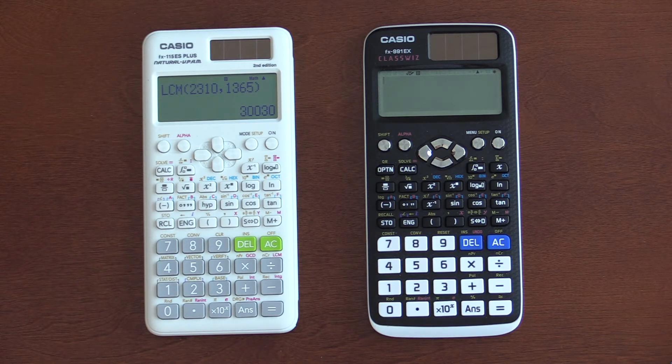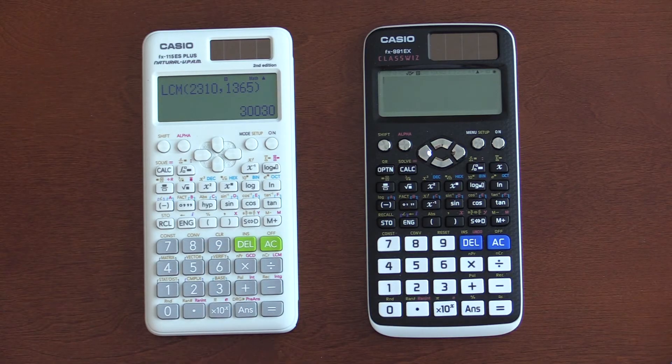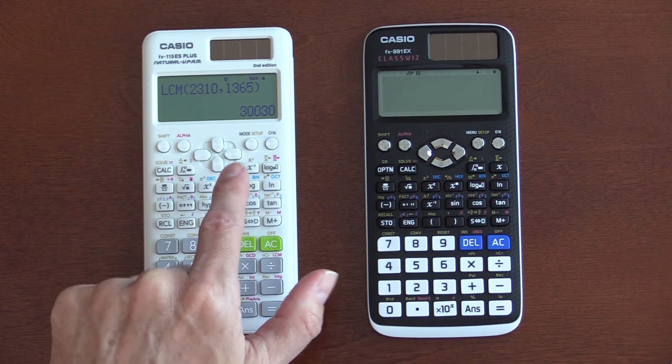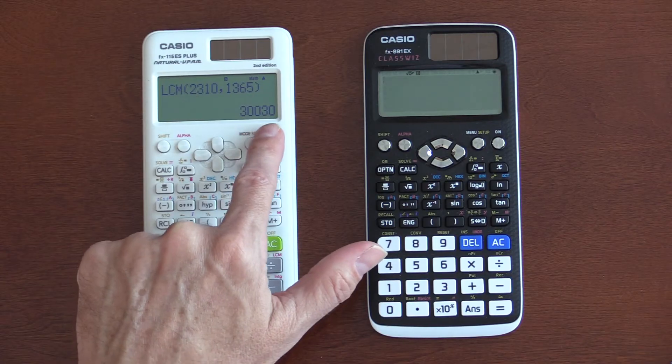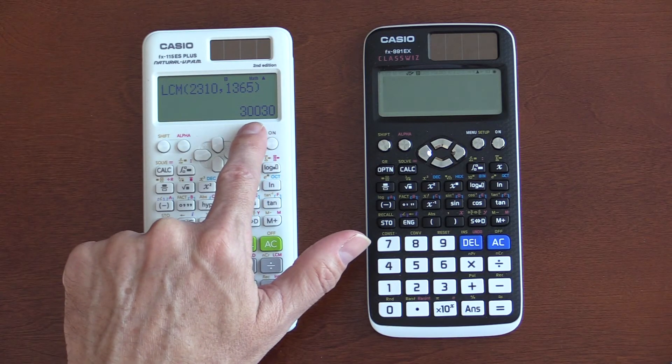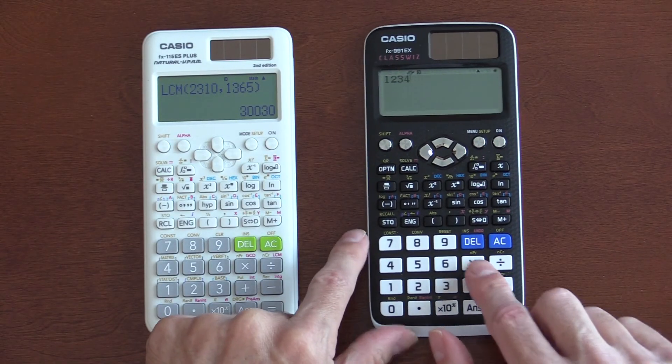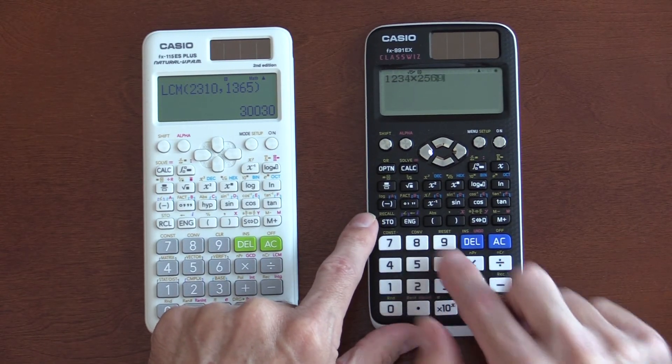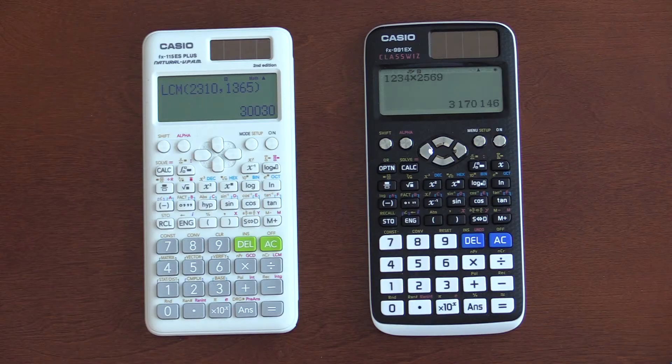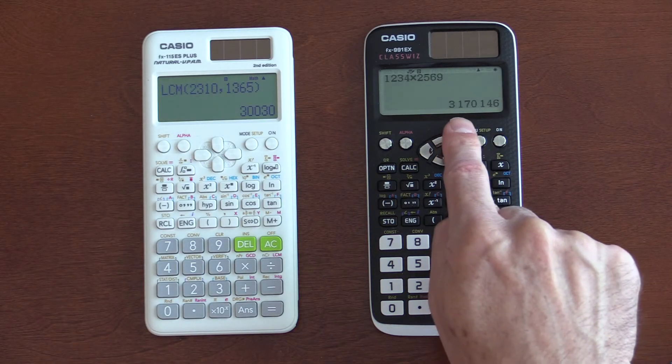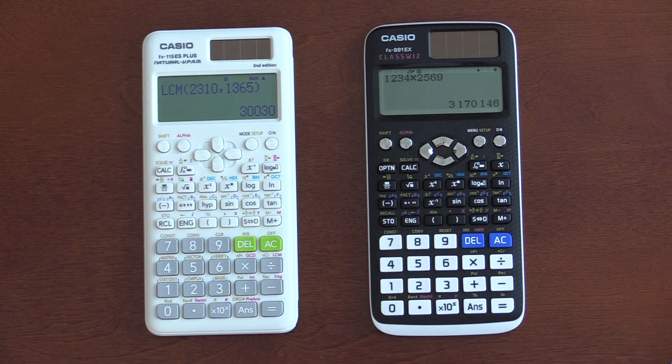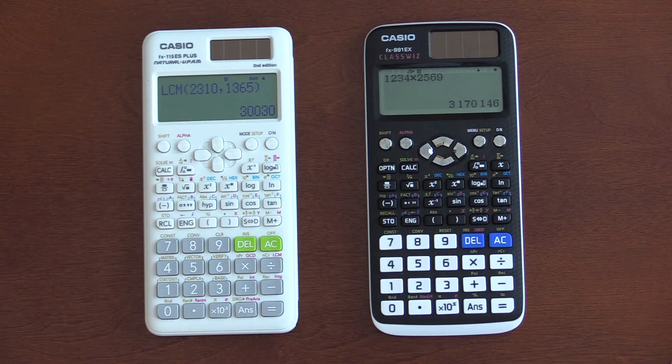Now, this does show you something that the ES does not have, which is a way to separate the digits. So, I wish that there was a little space here. I'll show you. If I do a random calculation on this. Notice the answer on the EX has a little space in between each set of three digits.